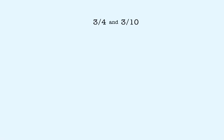Another example: three-fourths and three-tenths. We start by finding the least common multiple of the denominators, four and ten. We start by listing some multiples of four, as shown here. Then we list some multiples of ten. The least common multiple is twenty.